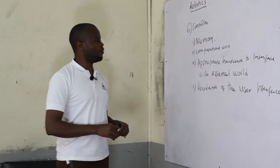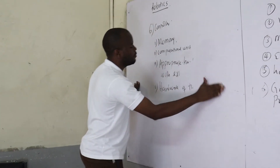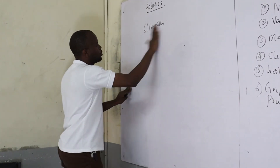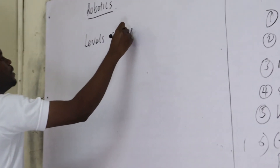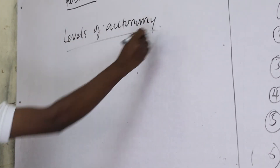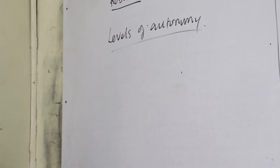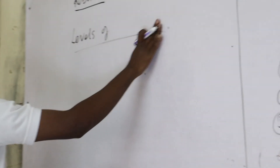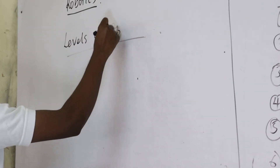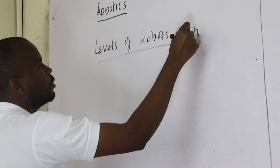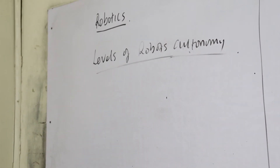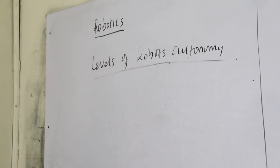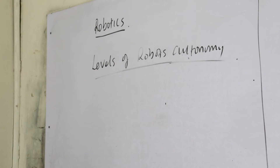With what we talked about as cognitive robots, it is better we look at the levels of autonomy of the robots. Just like any other control system, robots usually have varying levels of autonomy. We are going to talk about four levels of autonomy.